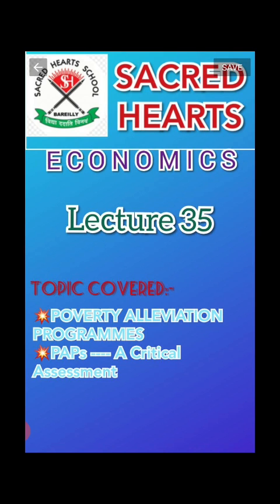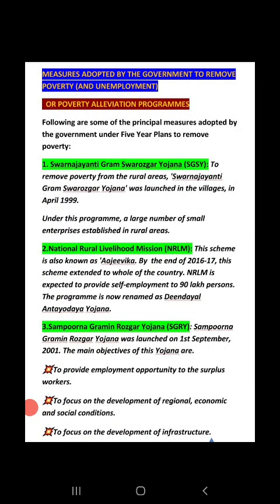That means, what was the negative and positive impact of the programs that were launched. So, starting with Poverty Alleviation Programs — basically the government adopted measures to control poverty as well as to remove unemployment from the country. For this sake, the government started Poverty Alleviation Programs — some programs were launched with the help of which we can alleviate and check poverty and help in removing it.